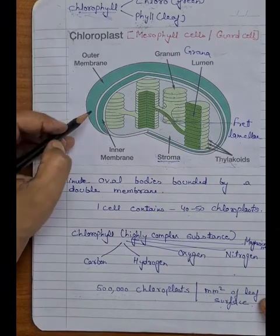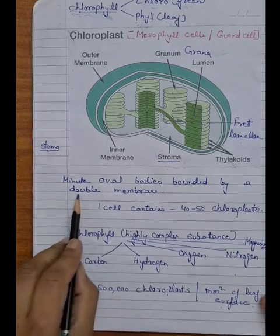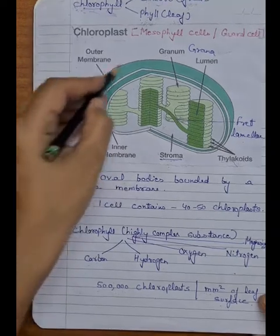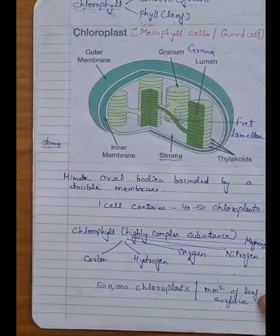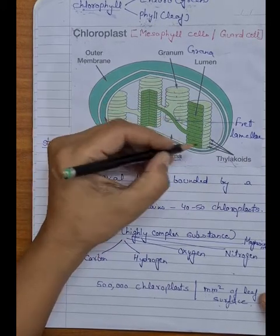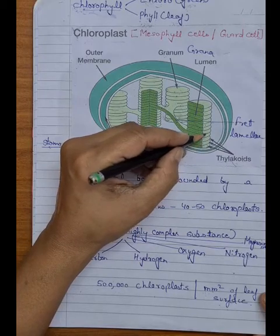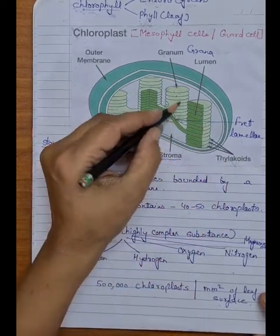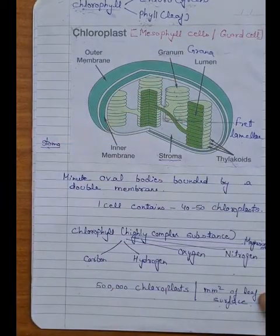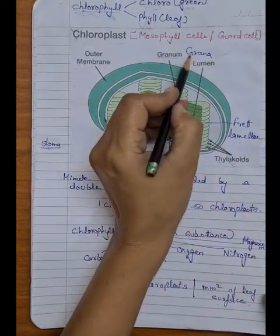Chloroplasts are minute oval bodies bounded by a double membrane — an outer membrane and an inner membrane. The interior of the chloroplasts contains closely packed flattened sac-like structures arranged in piles one over another. These flattened sac-like structures are known as thylakoids. When thylakoids are arranged in the form of piles, the pile forms one single unit known as a granum. More than one granum is present inside one chloroplast, and together they are known as grana.